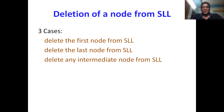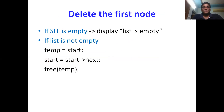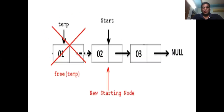The deletion operation also uses three cases — you can delete a node from a singly linked list in three ways: deleting the first node, deleting the last node, and deleting any intermediate node. Let's focus on each operation. To delete the first node, let's look at this diagram — assume this is the singly linked list and I want to delete the first element.